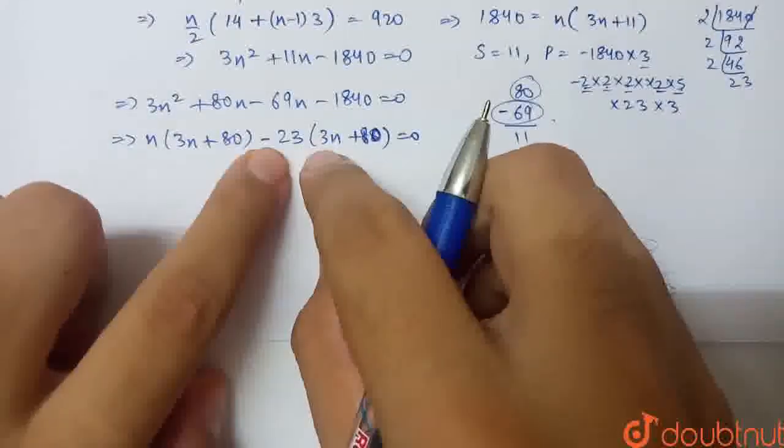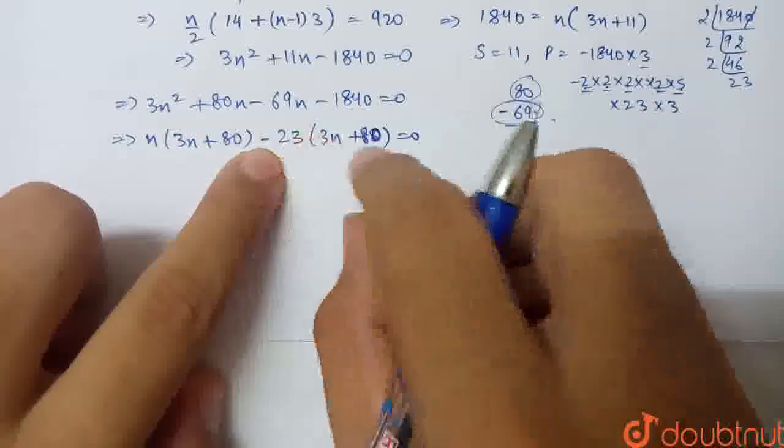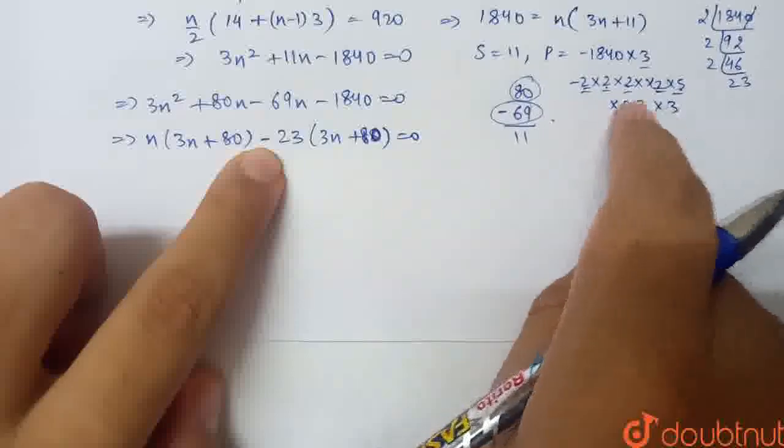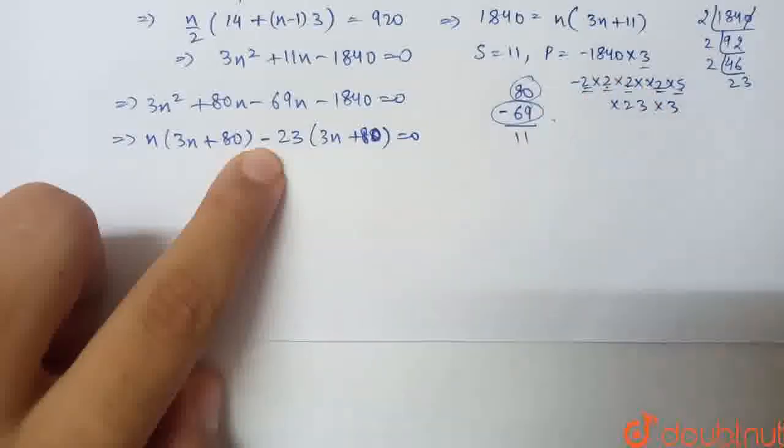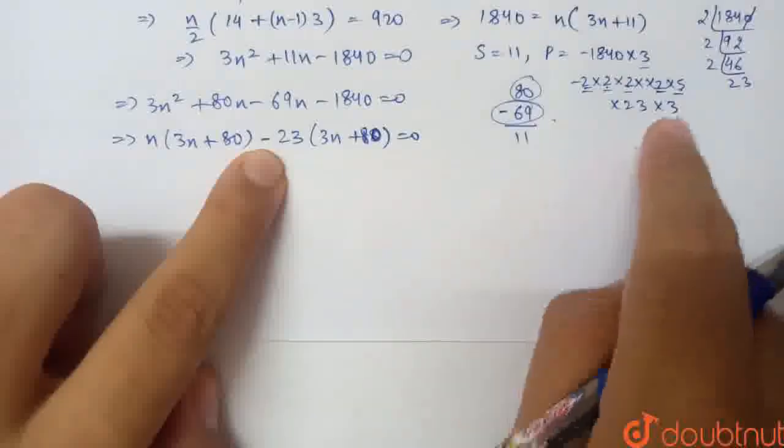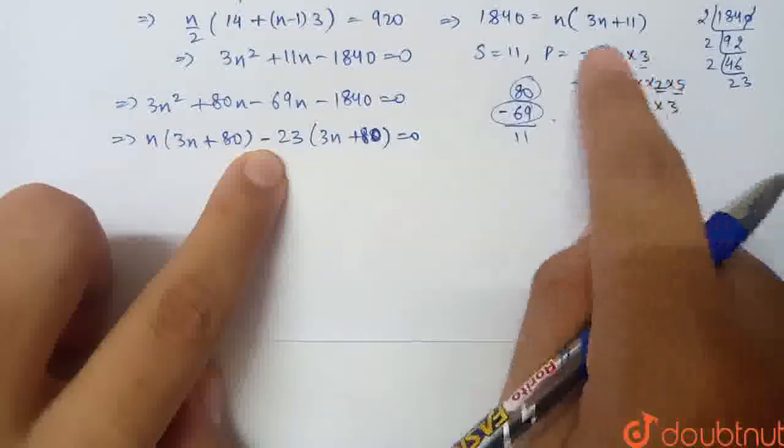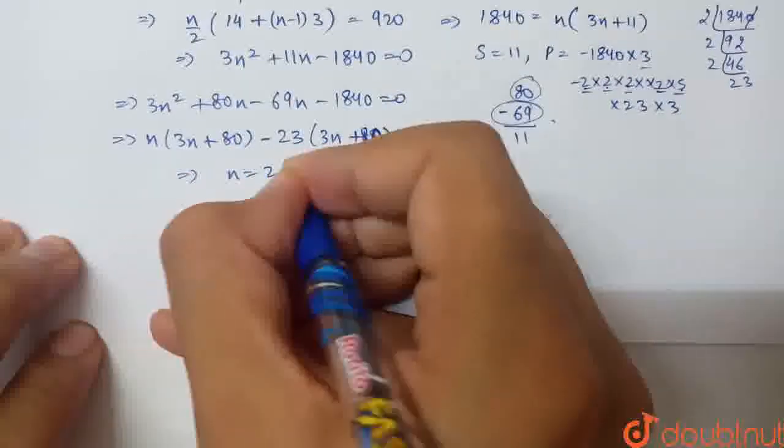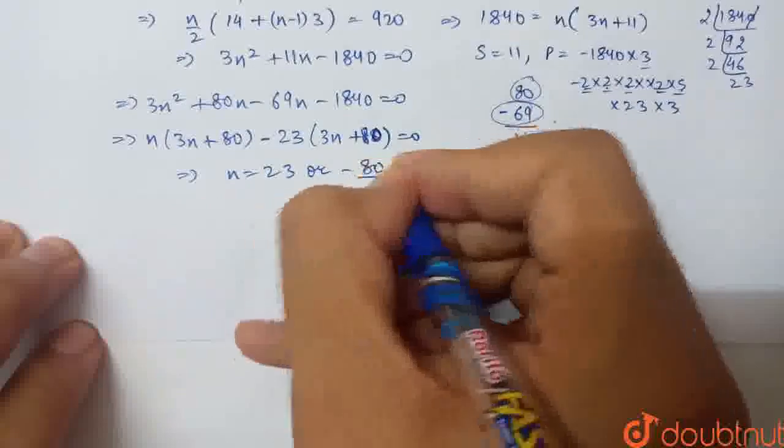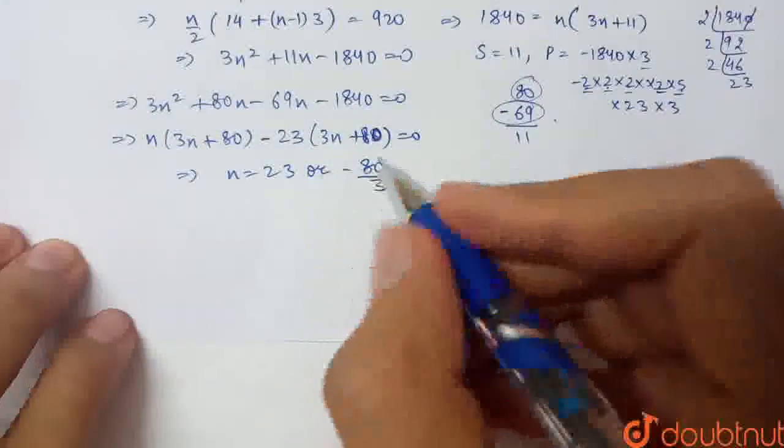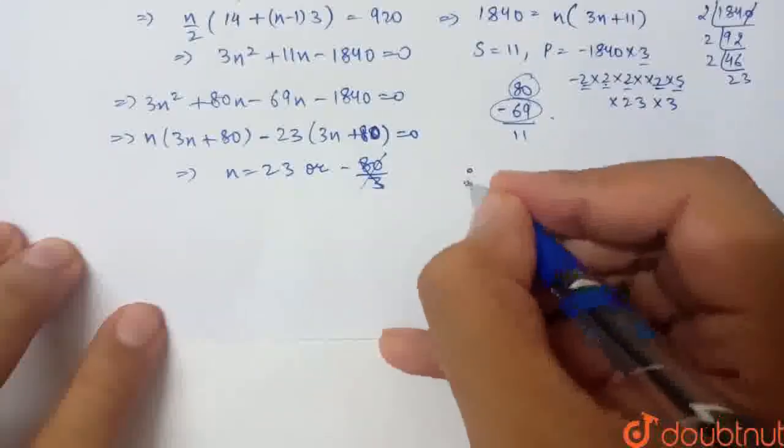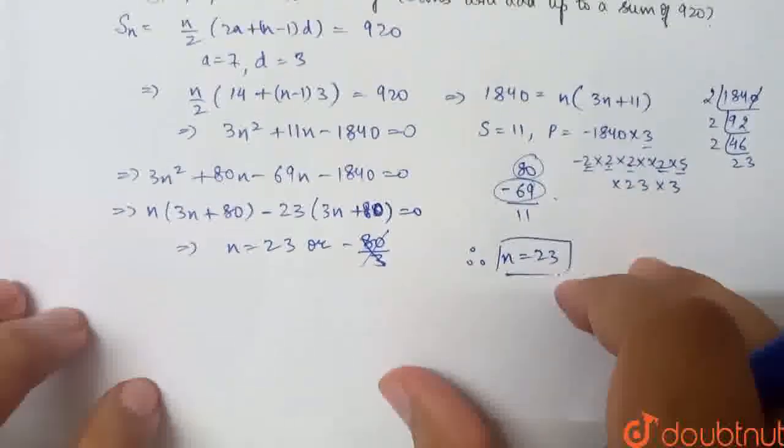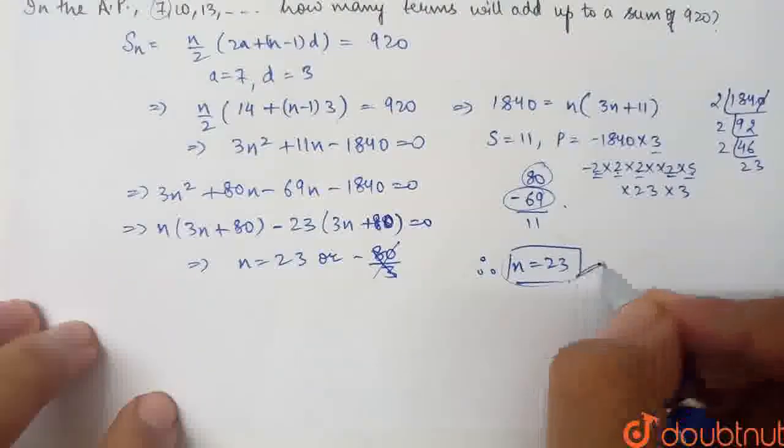You can see here, 23 × 3 is 69, and 23 × 80 is 1840. So n = 23 or -80/3. Now n is our number of terms, it's not a fraction, it's not negative. Therefore, n = 23. I asked how many terms will add up to the sum of 920? That is 23, 23 terms.